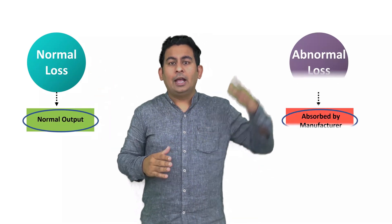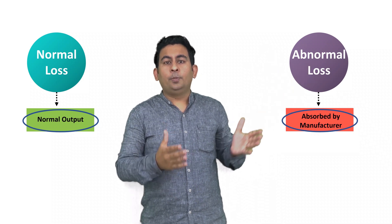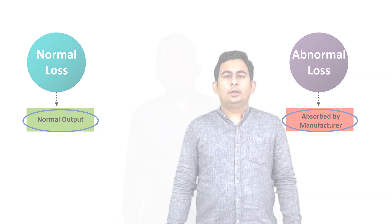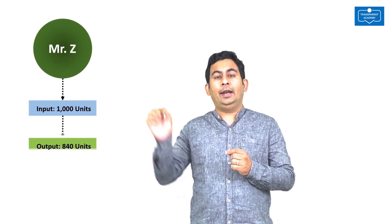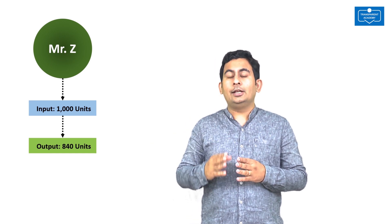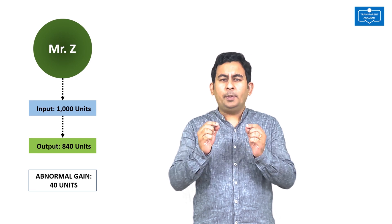So we conclude: whenever there is an abnormal loss, it cannot be passed on to the customer — it has to be taken by the manufacturer. To summarize: normal loss can be absorbed by the normal output; abnormal loss should be absorbed by the manufacturer. As for abnormal gain, even then the manufacturer need not pass on the gain to the customer. Mr. Z introduces 1000 units and gets a stunning output of 840 units — there is a gain of 40 units.